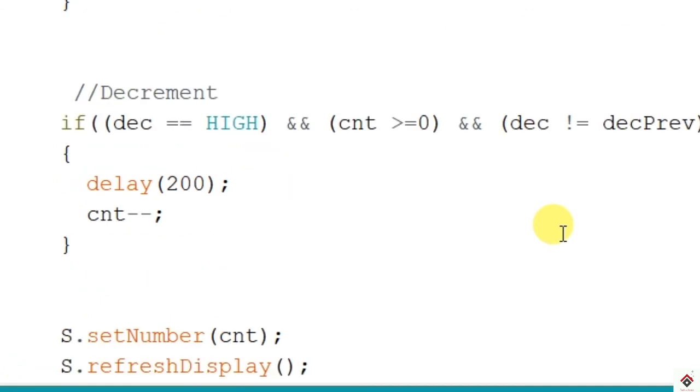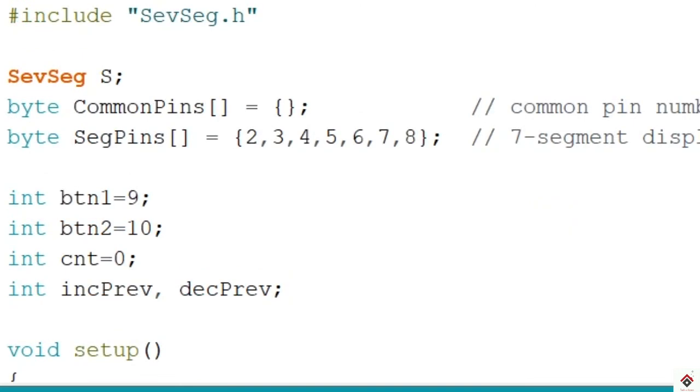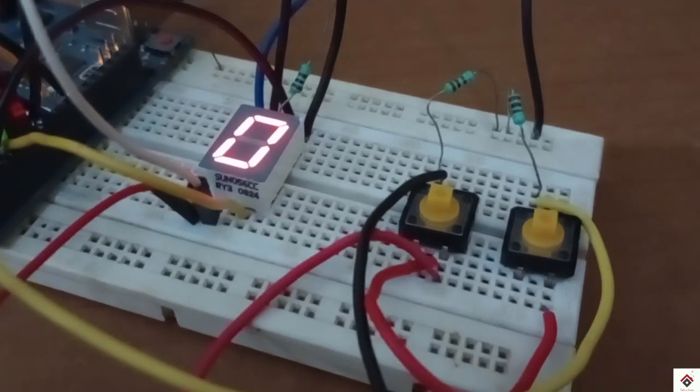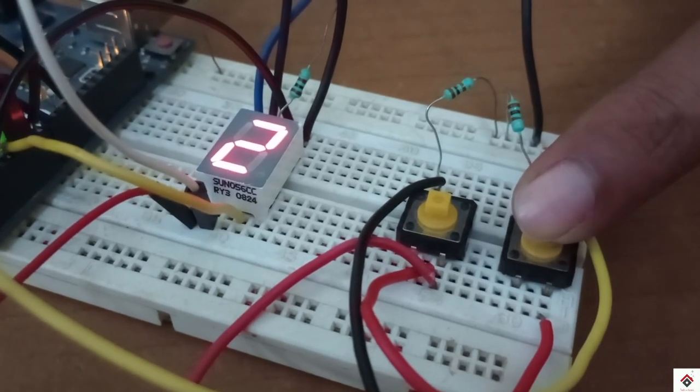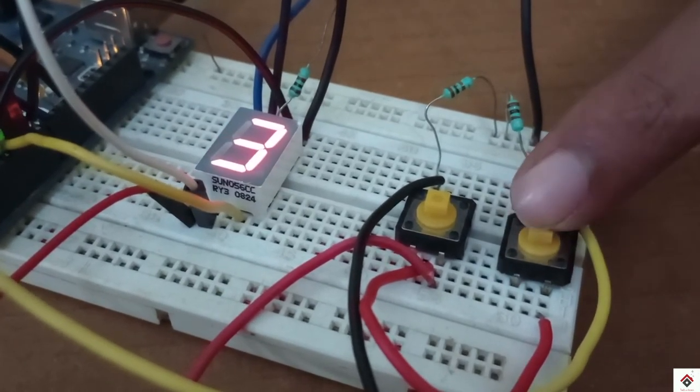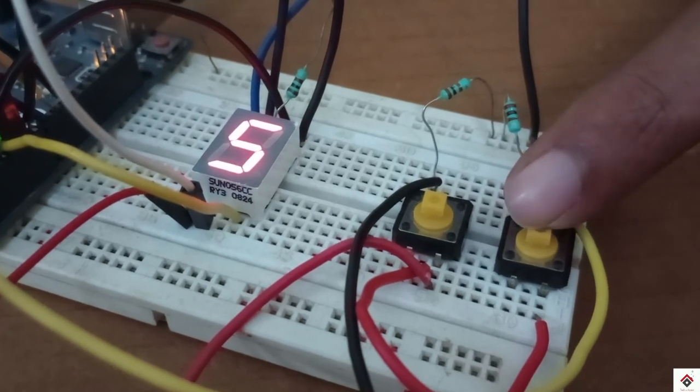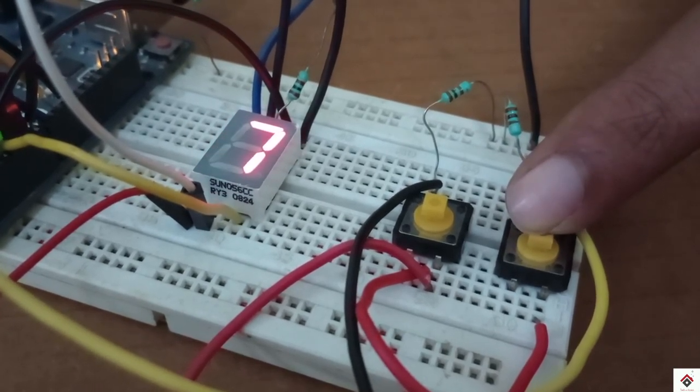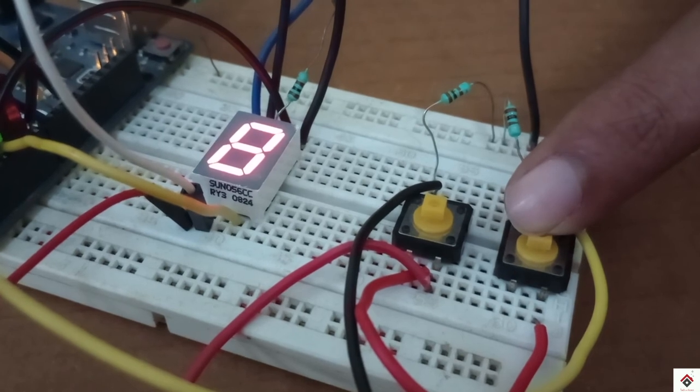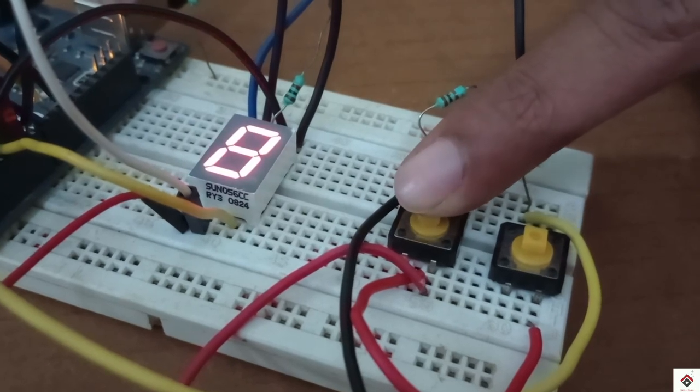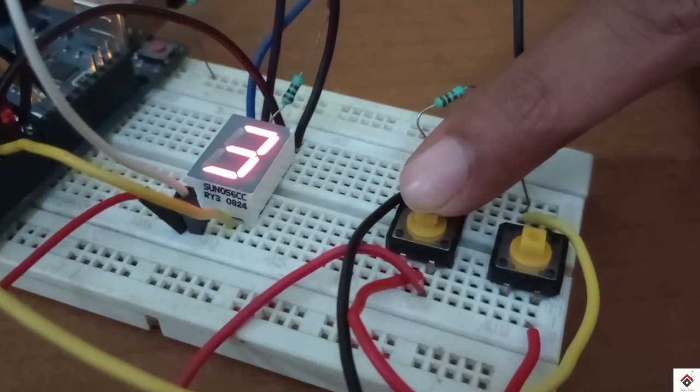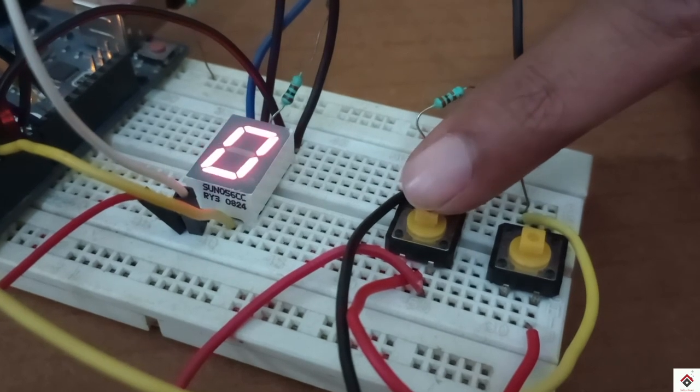That's it, we are done with the code. We will upload this and check how it works. By default, it starts with 0, and using this button we can increase the count. The last value will be 9, and similarly using the other button we can decrease the value up to 0.